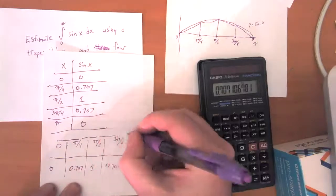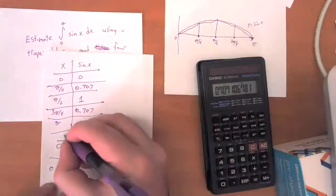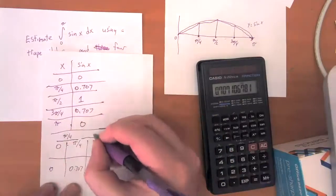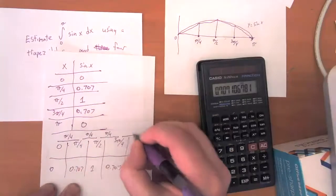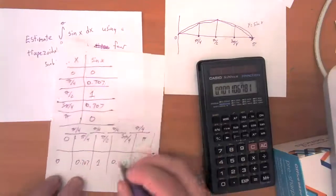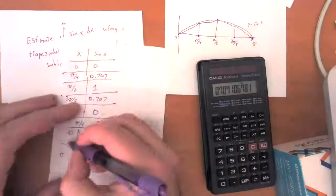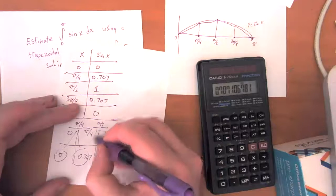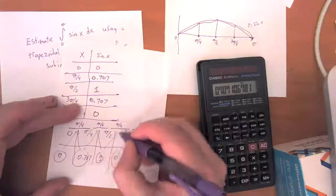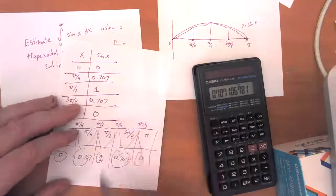Each one of these sub intervals has width of pi over four. And for each one of these, since it's a trapezoidal sum, I'm going to be using both the values on the left and the right. So my estimated area...